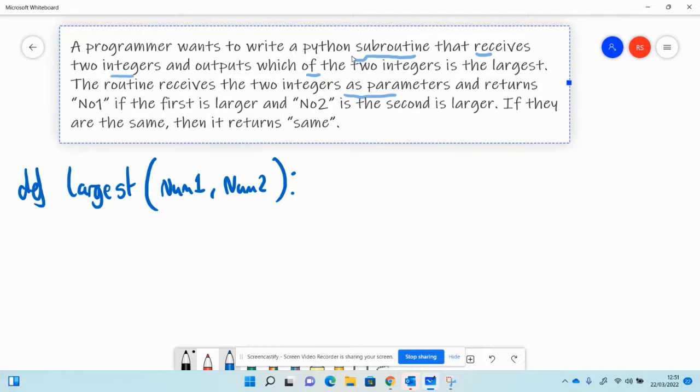So we can immediately then say, go into our selection. If num1 is bigger than num2, we can return the value that it asks us to do, so return.